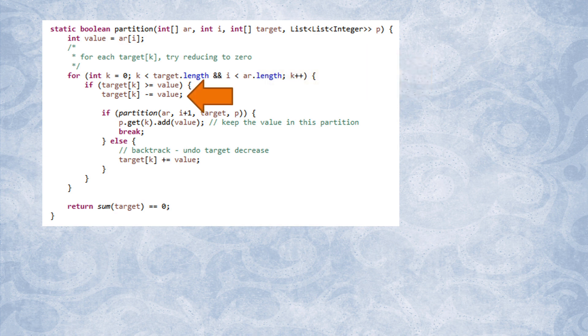So the function is going to try to place the value from the array at index i into one of the partitions, which is equivalent to reducing the corresponding target by that value. We don't know which target to use, so there's a for loop to try each one.